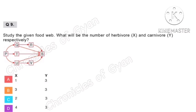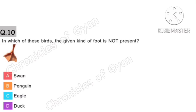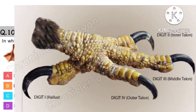Question 10. In which of these birds is the given kind of foot not present? This type of feet are webbed feet — strong feet used to swim and run across water and launch into flight. Option C: Eagle does not have this type of feet. Eagle has scaled feet with 4 toes each with a serious claw — 3 toes face forward and the 4th faces backward to aid in gripping prey.